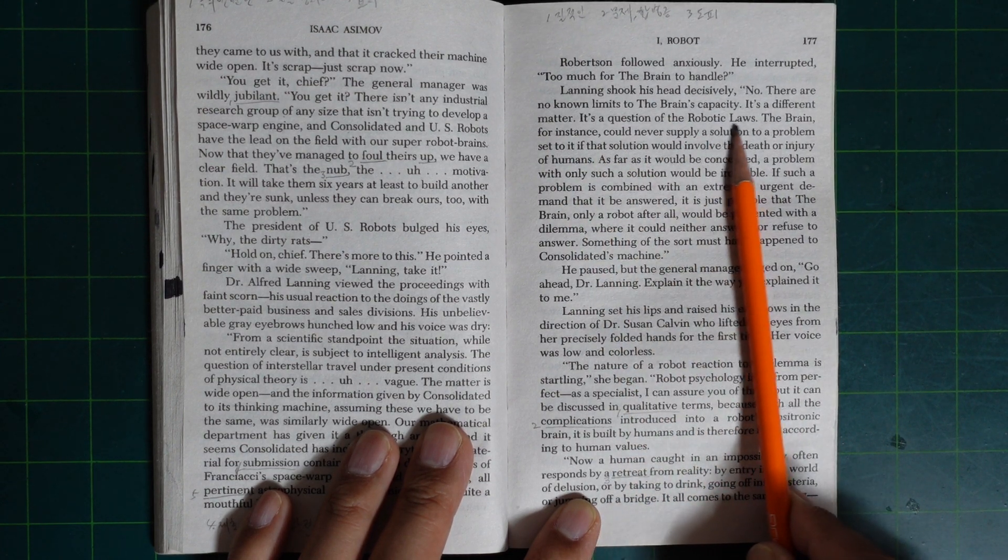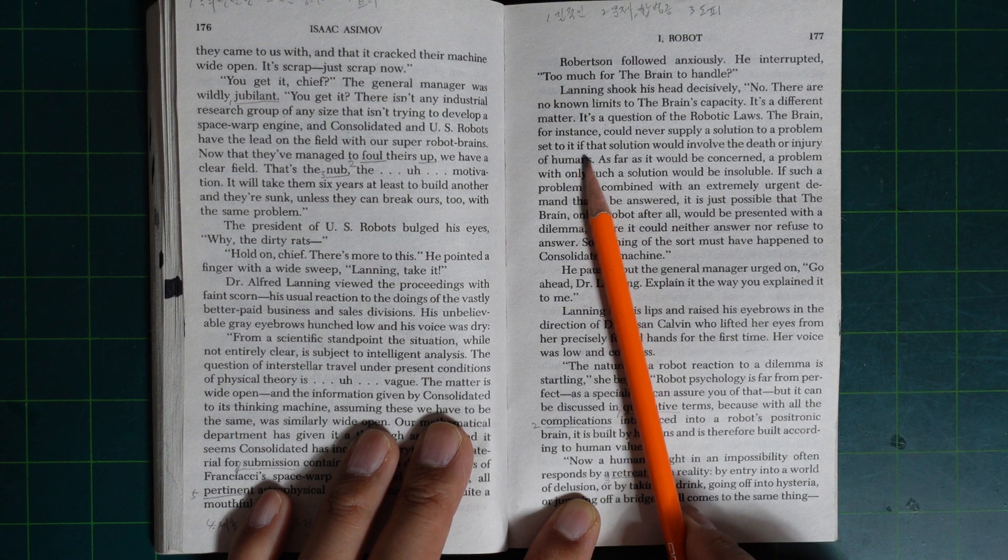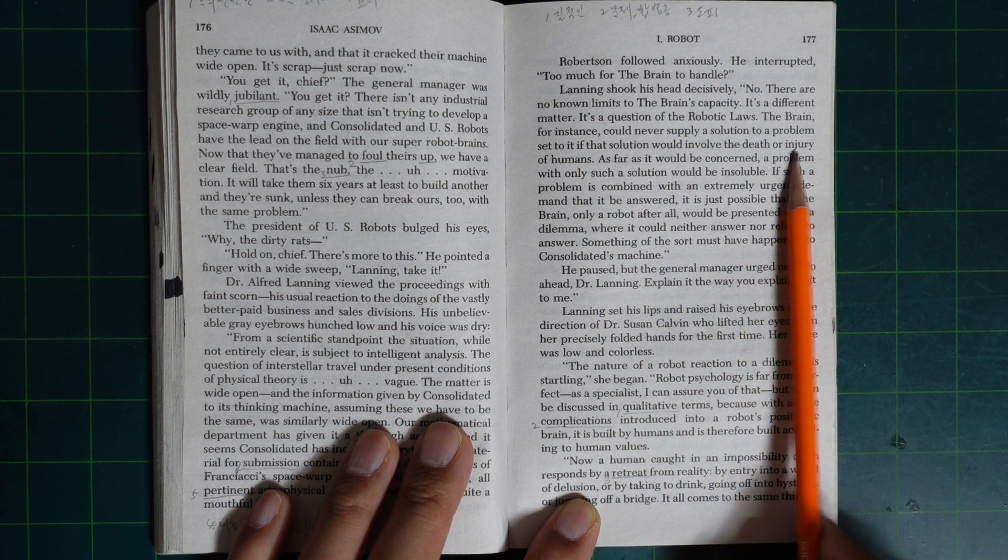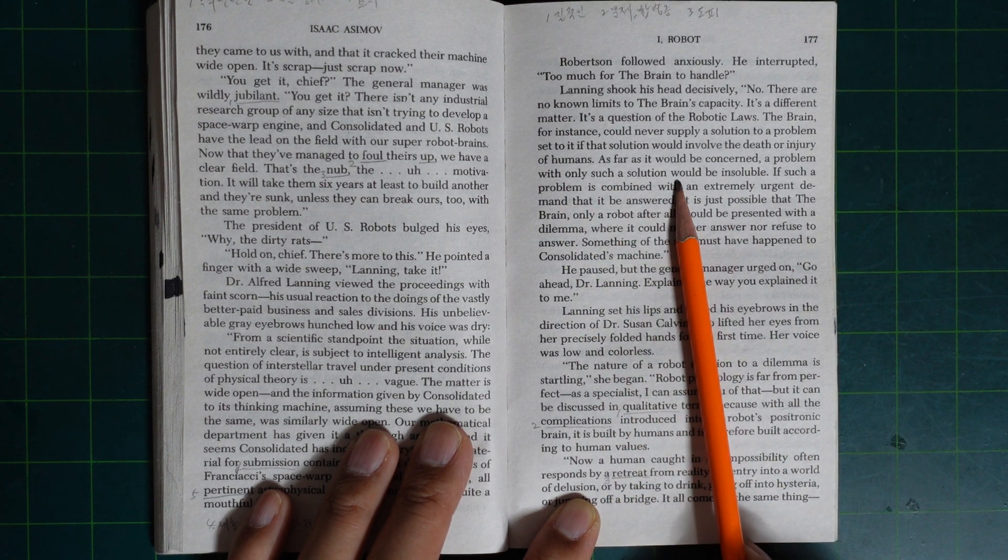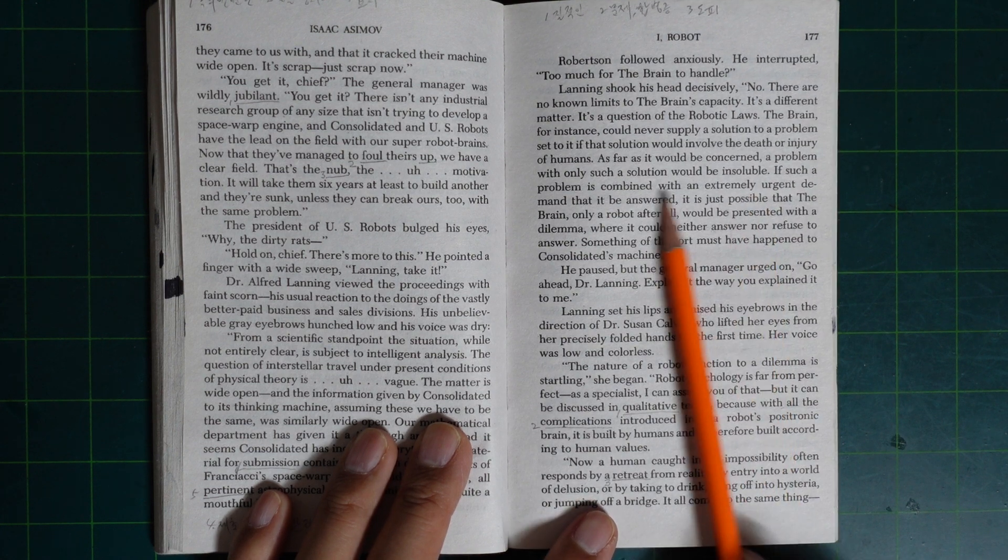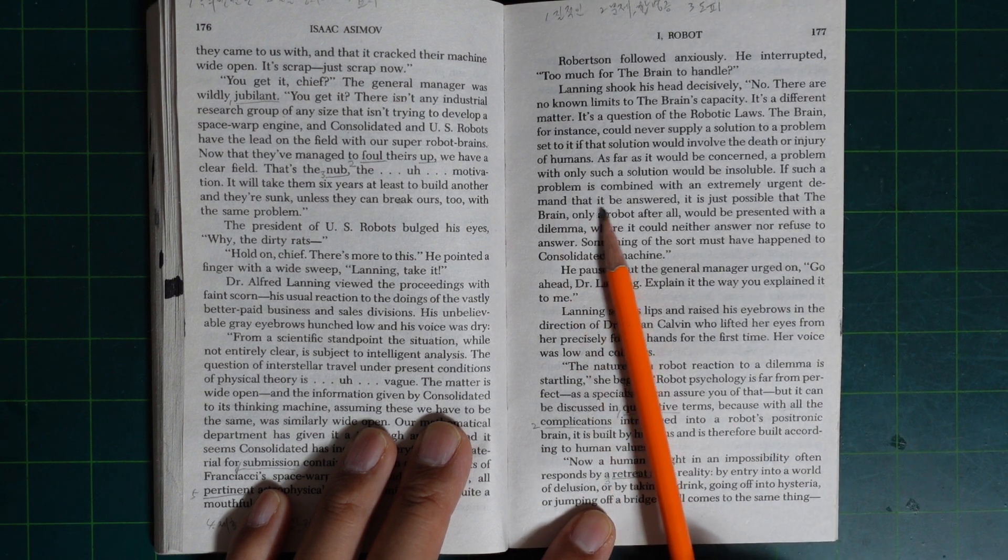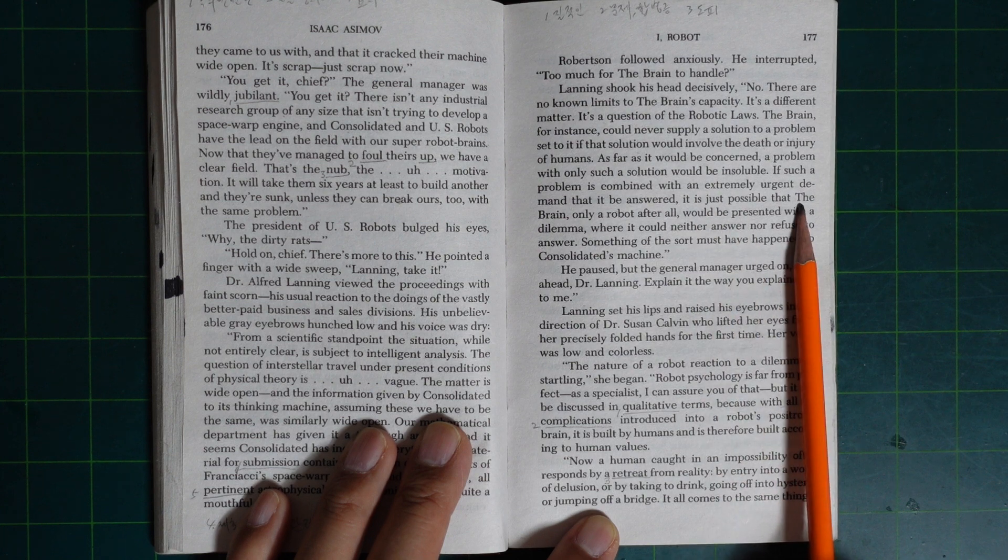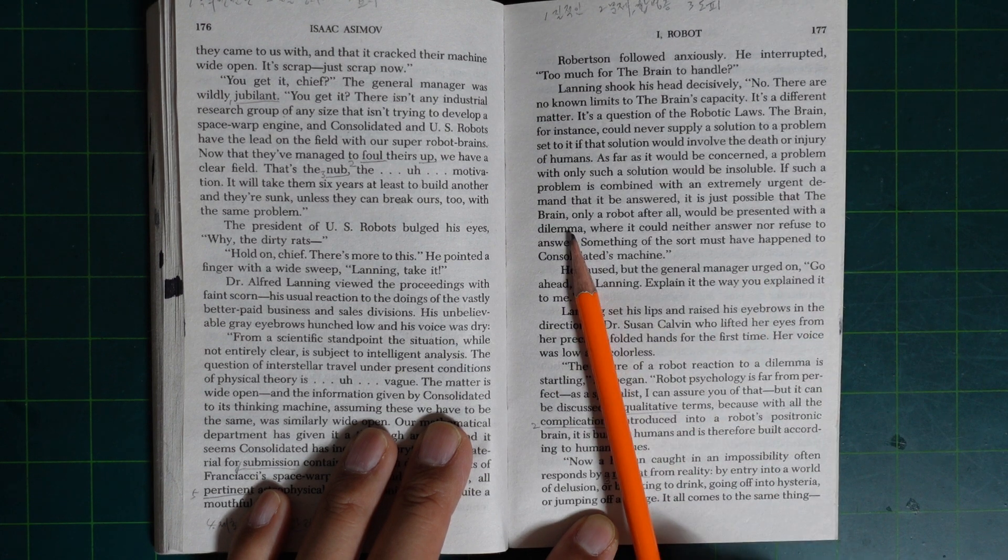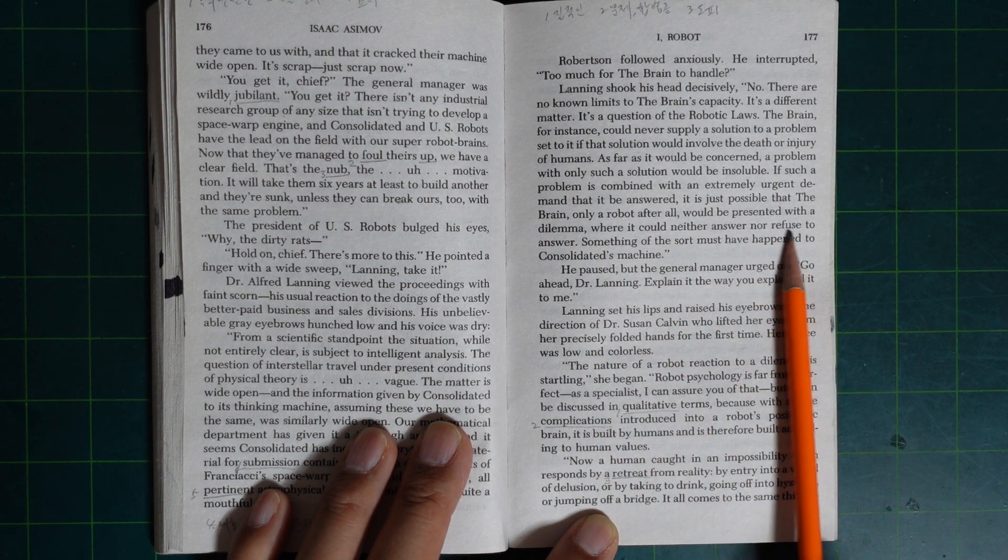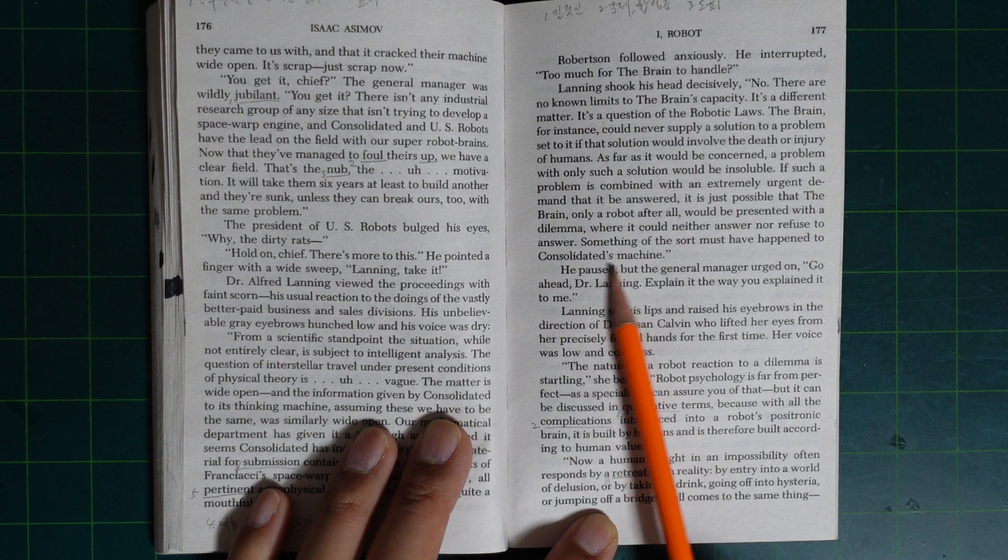Robertson followed anxiously. Is it too much for the Brain to handle? Lenning shook his head decisively. No. There are no known limits to the Brain's capacity. It's a different matter. It's a question of the robotic laws. The Brain, for instance, could never supply a solution to a problem set it if that solution would involve the death or injury of humans. As far as it's concerned, a problem with only such a solution would be insoluble. If such a problem is combined with an extremely urgent demand that it be answered, it's just possible that the Brain would be presented with a dilemma. It could neither answer nor refuse to answer. Something of the sort must have happened to Consolidated's machine.